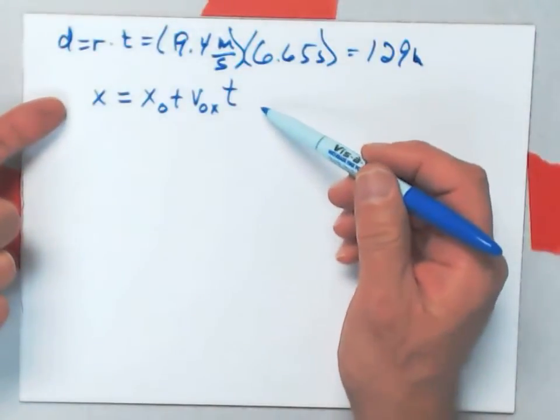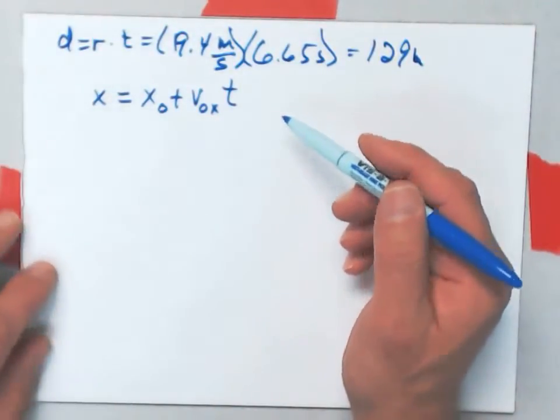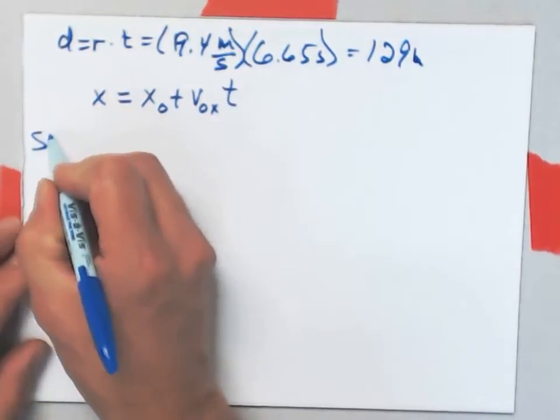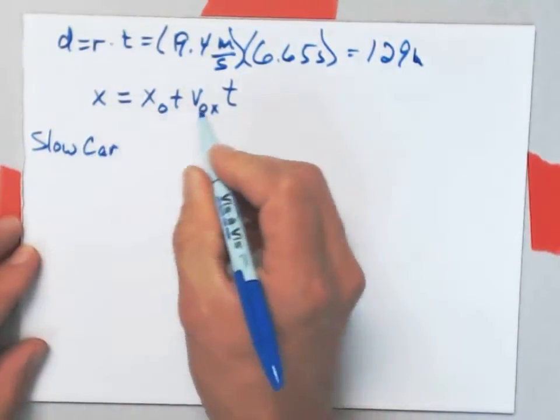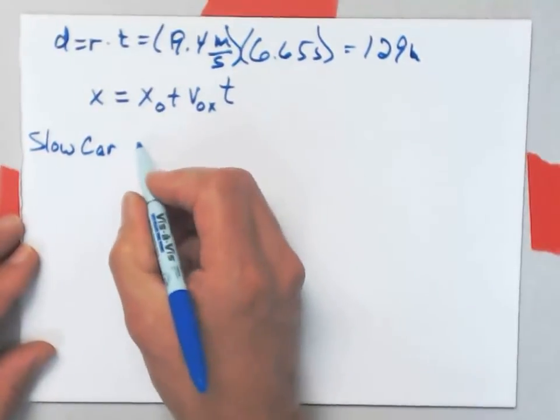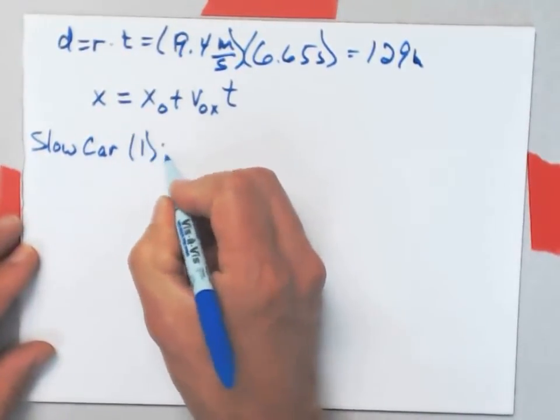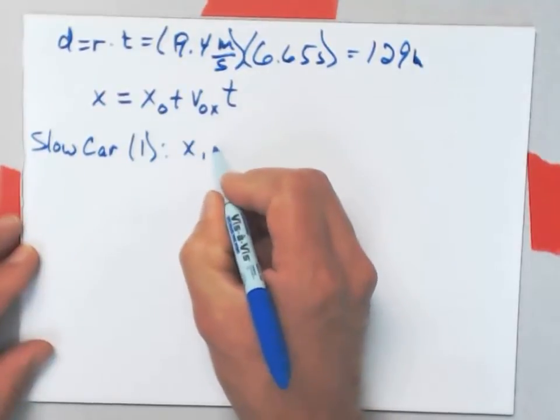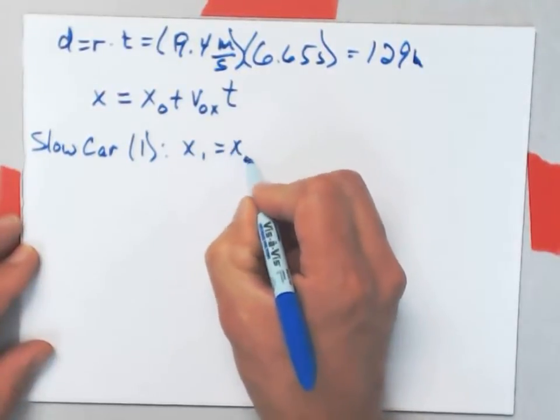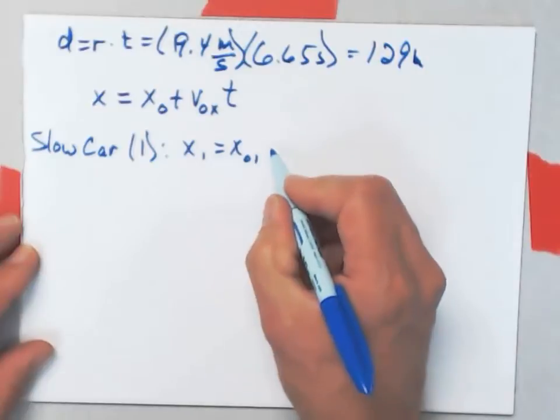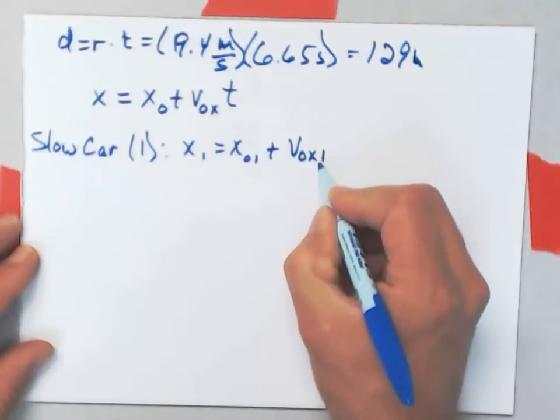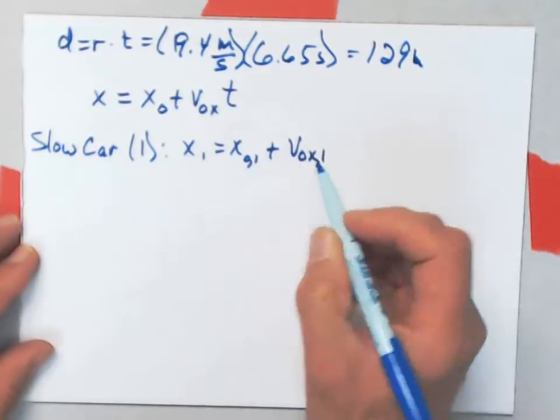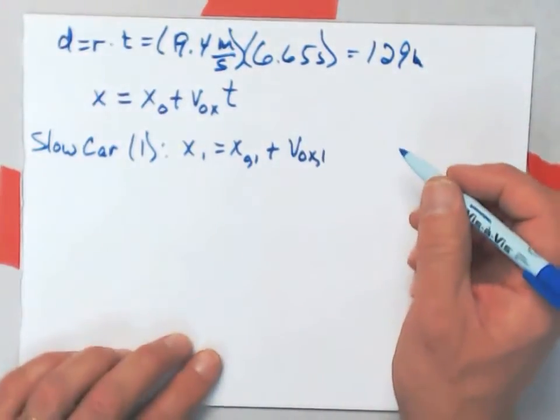In this case, I've got two different cars, so I need to split this up into two things. So, I'm going to say for the slow car, which I'm going to designate as car 1, it'll be x1 equals x naught for car 1 plus v naught x for car 1. And I could maybe put commas between those subscripts on there so I can distinguish them.